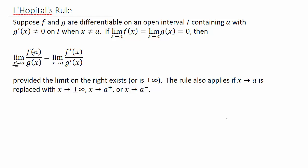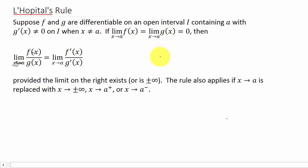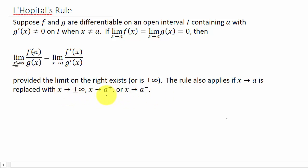Let's look at some more examples of L'Hôpital's rule. Basically, if we plug A in for X and we get 0 over 0, infinity over infinity, or negative infinity over negative infinity, then we can apply L'Hôpital's rule. That says the limit of F(x) over G(x) as X goes to A equals the limit of the derivative of the numerator over the derivative of the denominator as X goes to A, provided that limit exists or is plus or minus infinity. The rule also applies if X goes to A is replaced with X going to plus or minus infinity, or from the right or left.